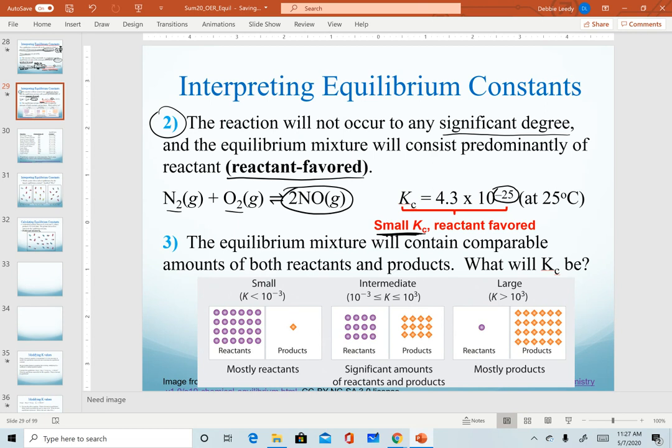In fact, the smaller a Kc, the more reactant favored it is. The larger a Kc, the more product favored it is. So K values can cover the entire range of values.